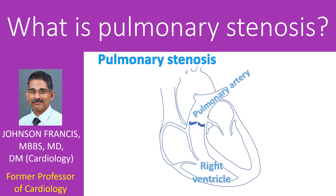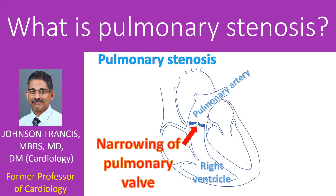Pulmonary stenosis is narrowing of the wall between the right ventricle and pulmonary artery. The pulmonary artery is the large blood vessel carrying blood to the lungs for oxygen enrichment. The right ventricle is the right lower chamber of the heart which pumps blood to the lungs. The pulmonary wall prevents backflow of blood from the pulmonary artery into the right ventricle when it relaxes after a contraction.